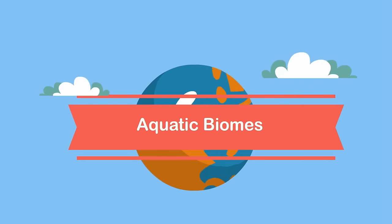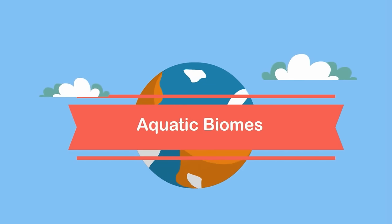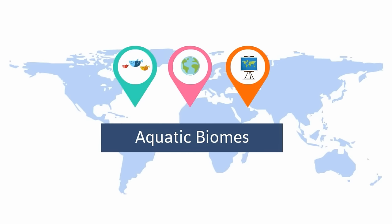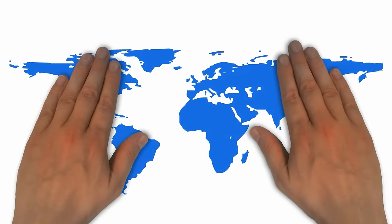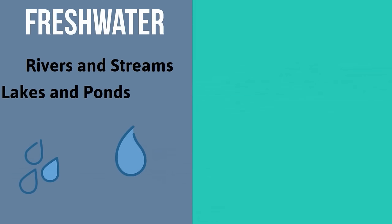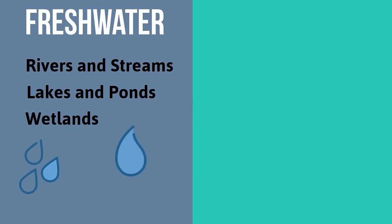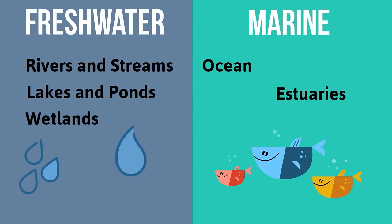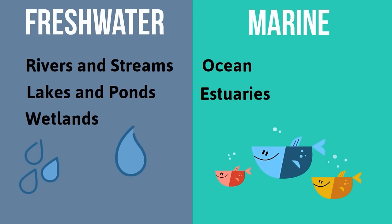Welcome to Moo Moo Math and Science. In this video I'd like to talk about aquatic biomes. The Earth is made up of almost 70% water. This water can be divided up into two basic aquatic biomes: freshwater, which includes rivers and streams, lakes and ponds, and wetlands; along with the marine biome, which includes the ocean and estuaries. So let's get started with aquatic biomes.